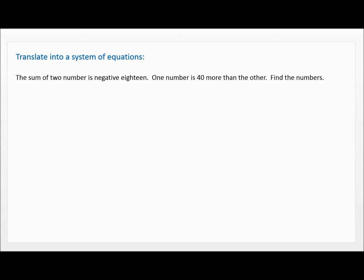Notice we have two different things going on here. When I read this, it says the sum of two numbers is negative 18. One number is 40 more than the other. Find the numbers.